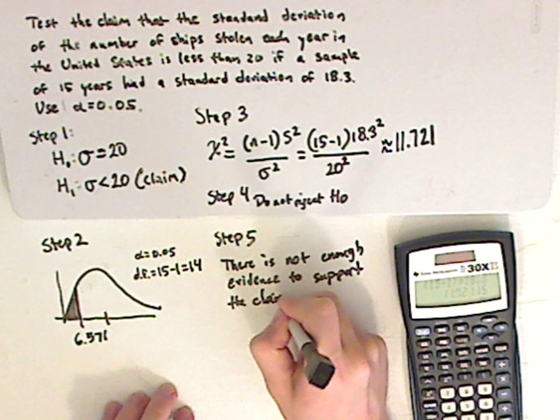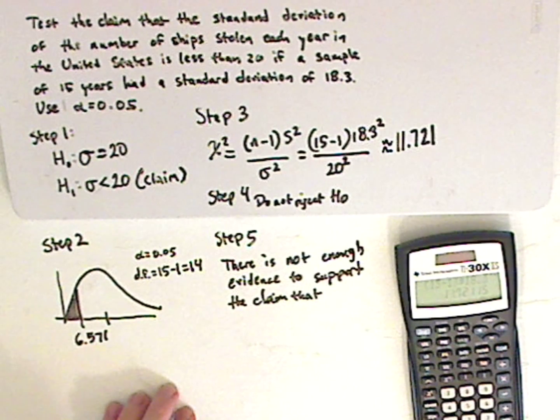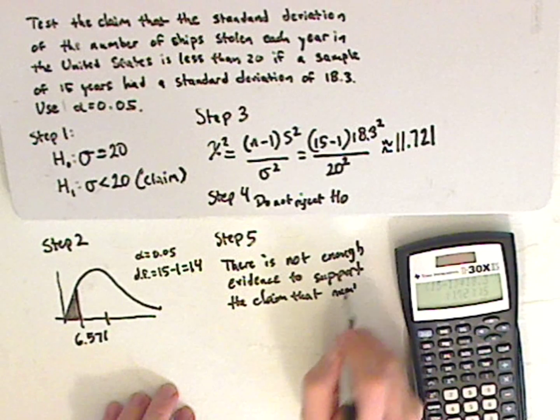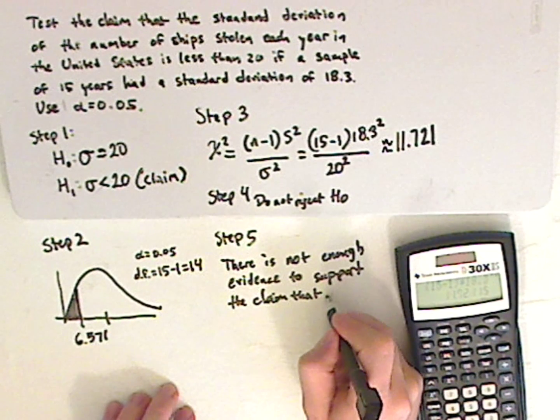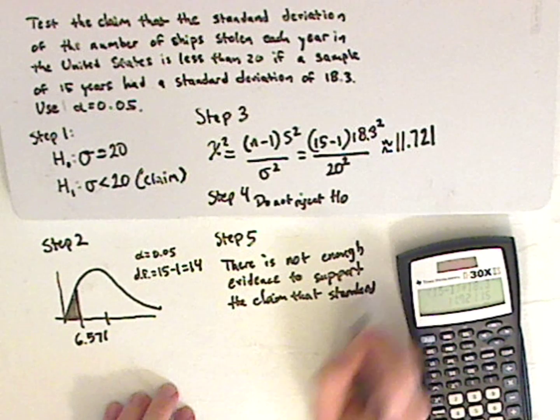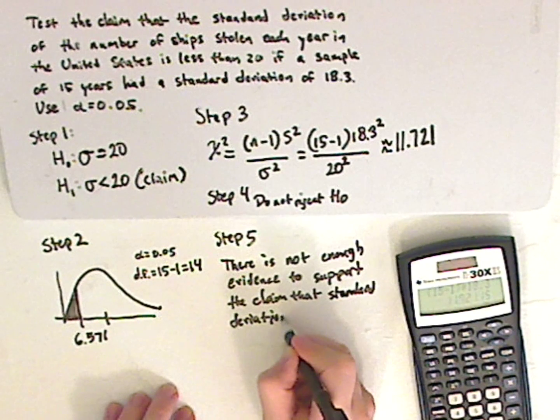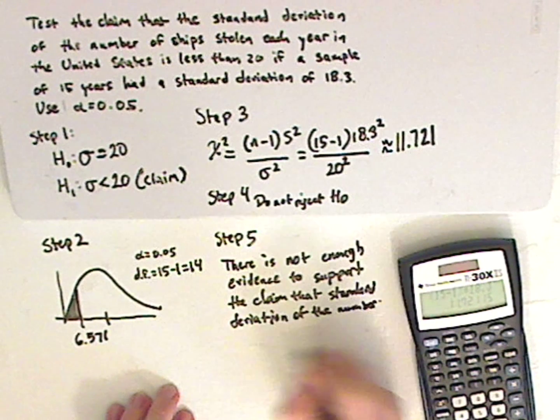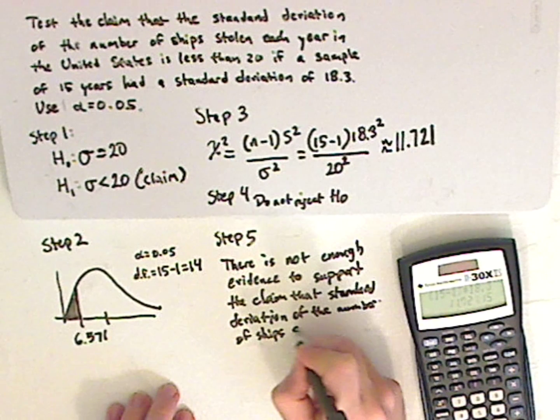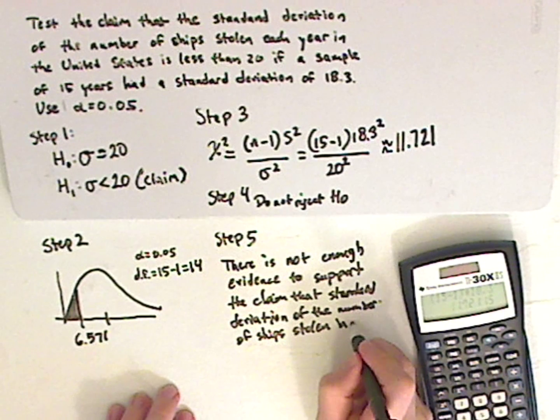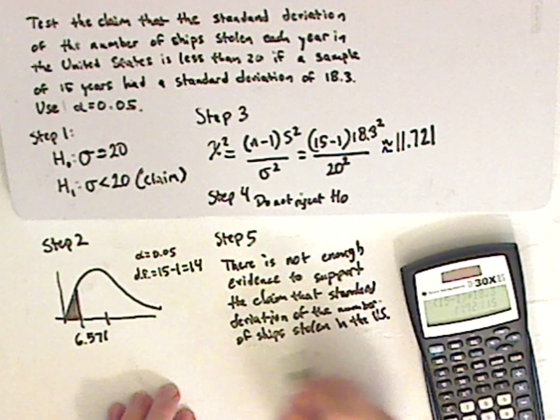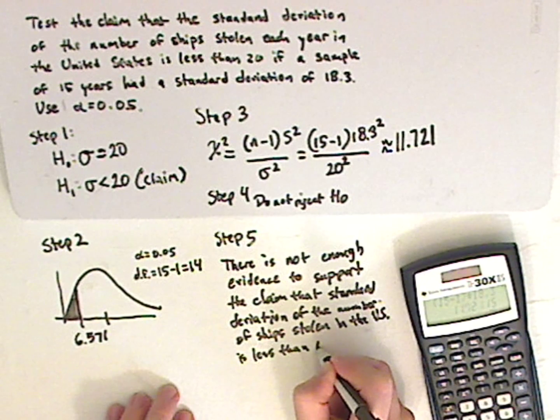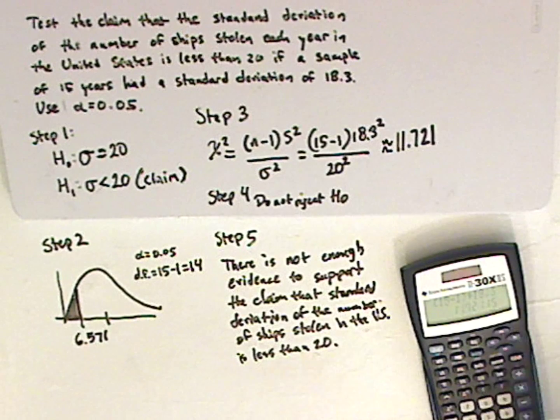The claim that, let me say it this way, the standard deviation of the number of ships stolen in the U.S. is less than 20. And that's it.